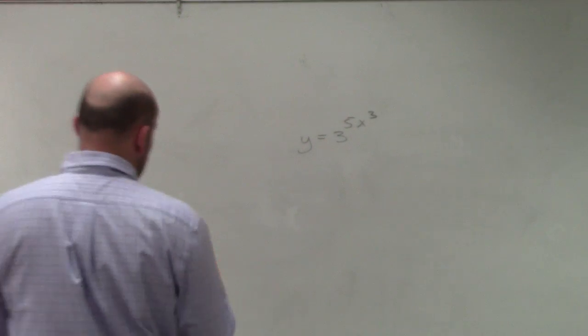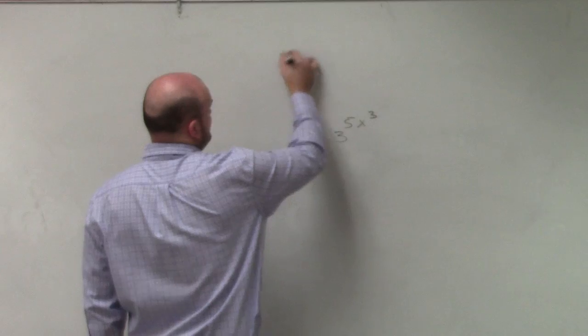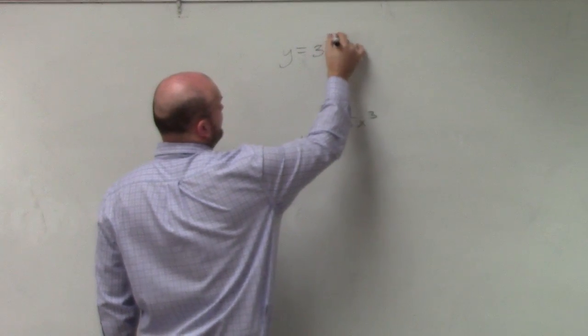We can go ahead and take a look, which I explained last class period. Let me actually write it up here because it's going to take some work: y = 3^(5x³).